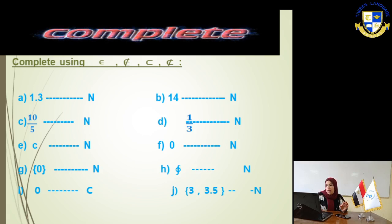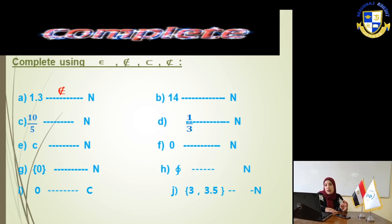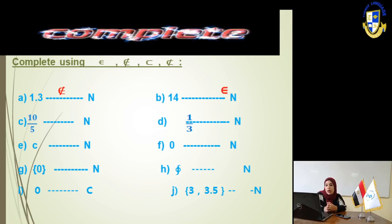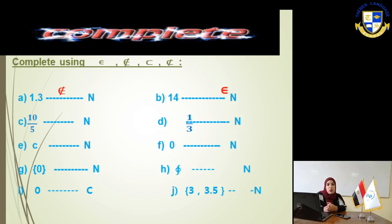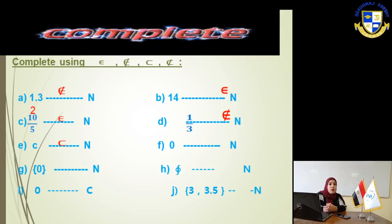Now let's see the first exercise: complete using 'belong', 'doesn't belong', 'subset', and 'not subset'. (A) 1.3 and set N: inside the set of natural numbers there is no decimal or fraction, so 1.3 doesn't belong to the set of natural numbers. (B) 14 and set N: 14 is a whole number, it's inside set N, so it belongs. (C) 10/5 and N: 10/5 is a fraction, but 10 ÷ 5 = 2, which is a whole number, so 2 belongs to the set of natural numbers. (D) 1/3 and natural numbers: 1/3 is a fraction in its simplest form, so it doesn't belong to the set of natural numbers.